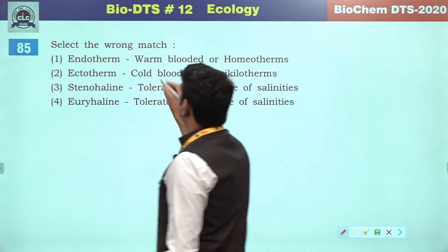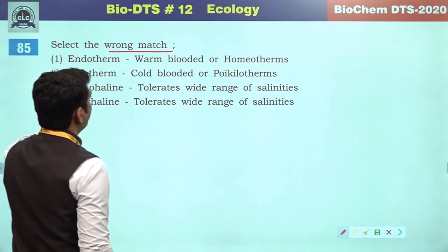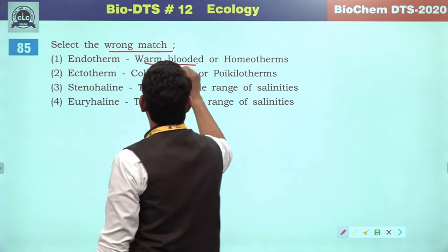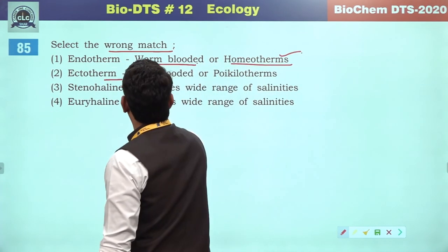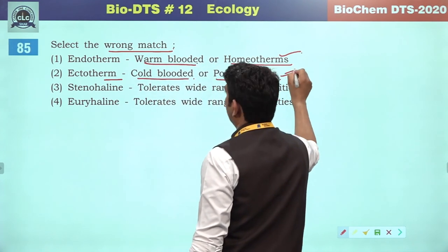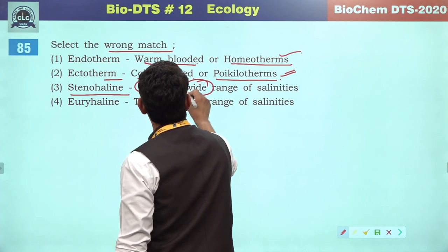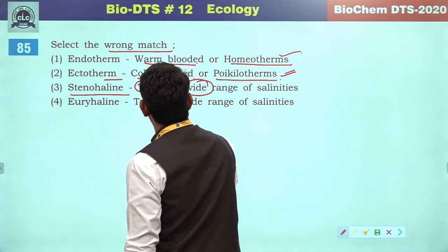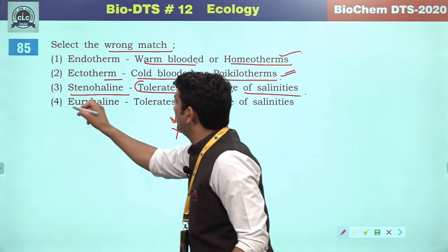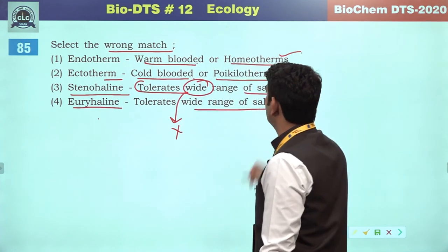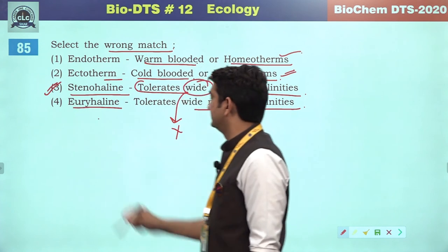Select the wrong match. Endotherms — warm-blooded and homeotherms — correct. Ectotherms — cold-blooded and poikilotherms — correct. Stenohaline — tolerates a wide range — this is the incorrect reference, as stenohaline tolerates a narrow range. Euryhaline — tolerates a wide range of salinity. So the wrong match is the third option.